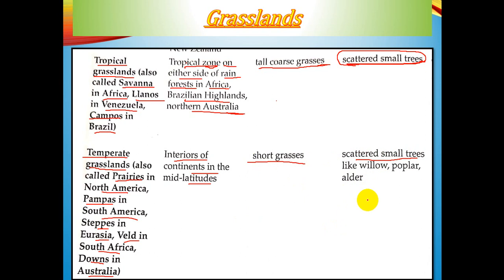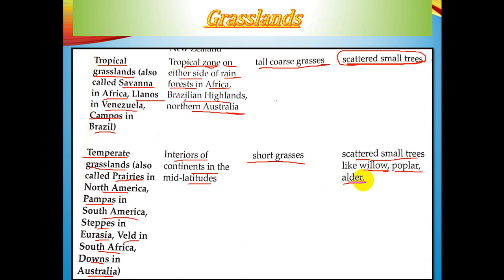Temperate grasslands are important for grazing due to mild temperature and moderate rainfall, which support grass growth for cattle rearing. Where cattle rearing is not practiced, they are used for extensive commercial grain farming, particularly wheat and corn. Tree species present in these areas include willow, poplar, and alder.